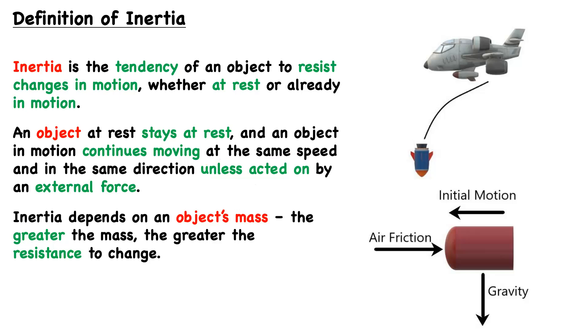The inertia depends on an object's mass. The greater the mass, the greater the resistance to change — or in other words, the more inertia.